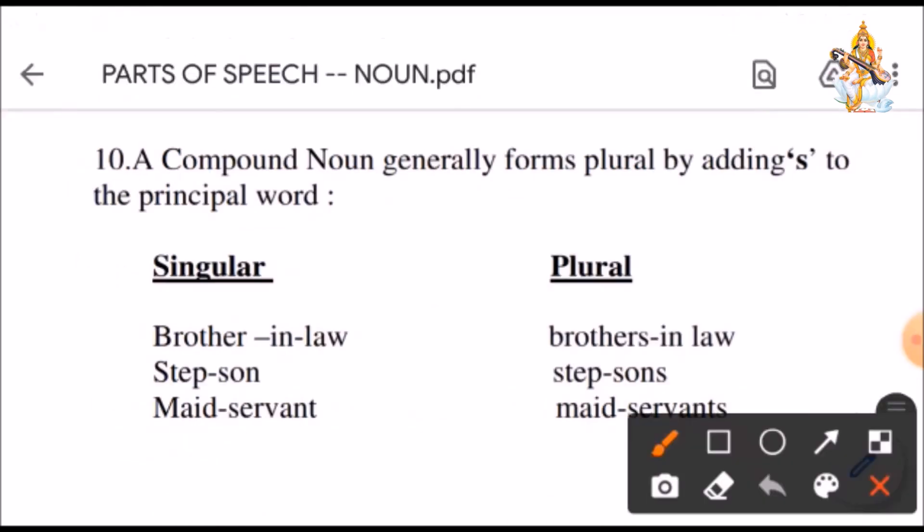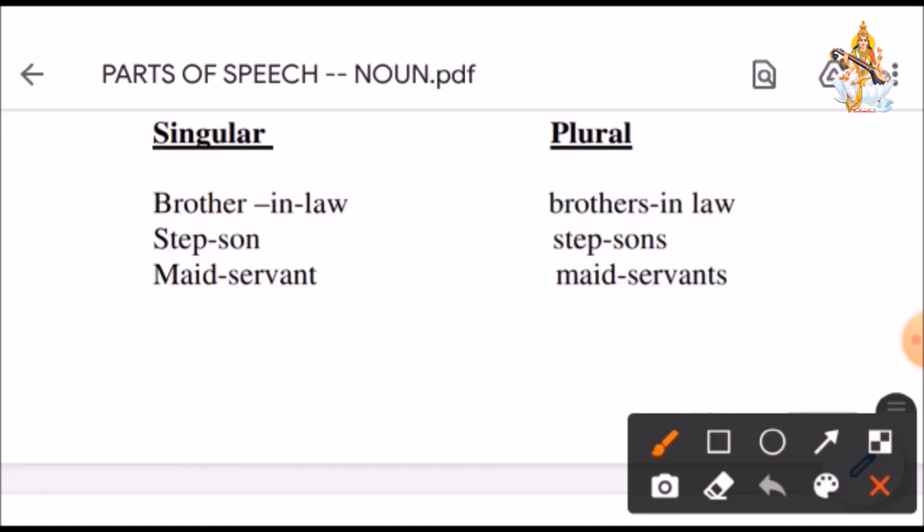Now, there are compound words also in English. Compound noun generally forms plural by adding S to the principal word. Principal word means main word. Your examples are brother-in-law. Here main word is brother. So, brother will be converted into plural. Brothers-in-law. Stepson, step sons. Maid-servant, maidservants.